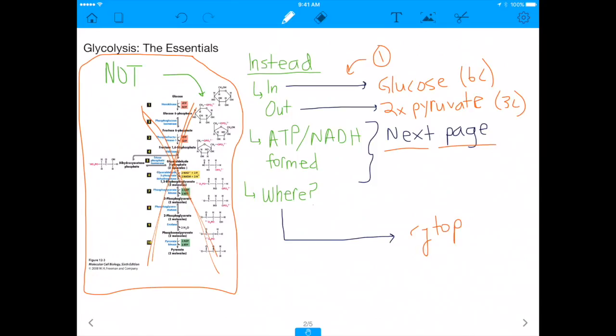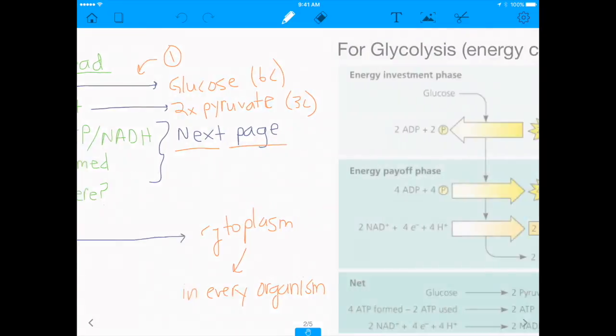For glycolysis, this is the cytoplasm. Because as many of you know, glycolysis is the most fundamental energy harvesting process that exists. It exists in almost every organism. And for that reason, it needs to happen in a place that's conducive and accessible to every organism. And the cytoplasm is exactly that place because the cytoplasm is in every organism. And that's why glycolysis happens in every organism.